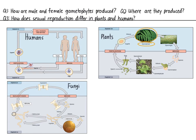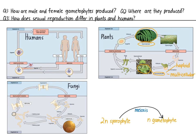The sporophyte produces haploid spores through meiosis. These haploid spores then undergo mitosis to produce more haploid cells and, in this way, grow into the haploid multicellular gametophyte. The gametophyte, as its name suggests, is what produces the gametes — the egg or the sperm. Once these complete fertilization, they once again produce the diploid sporophyte plant. This changing from diploid sporophyte to haploid gametophyte and back is known as alternation of generations.